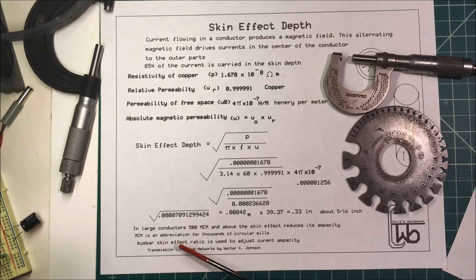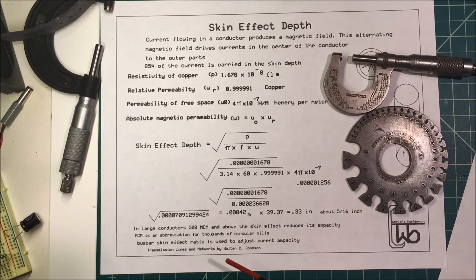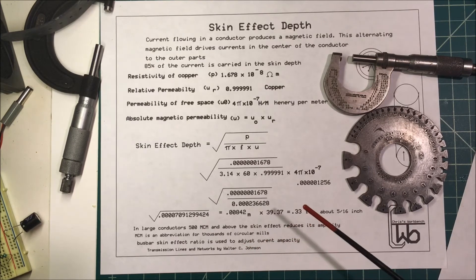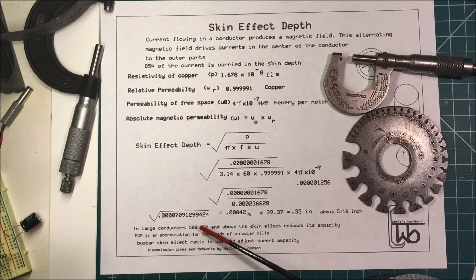MCM is an abbreviation for thousands of circular mills. A circular mill is a unit of cross-sectional area equal to the area of a circle that is one mil, 0.001 inches in diameter. Just a way of measuring the larger wires.